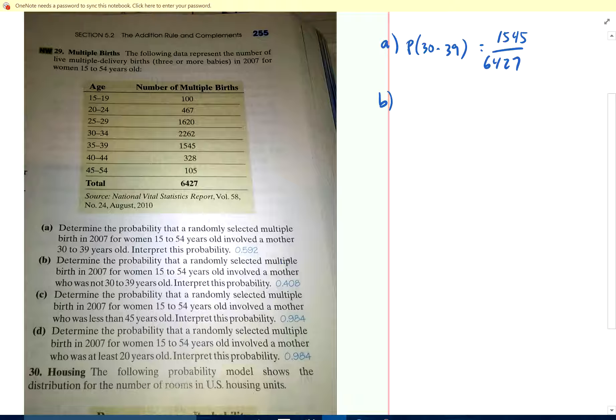B. Determine the probability of multiple births from 15 to 54 involved in a mother who was not 30 to 39. Well, let's look at this. Probability that you are 30 to 39 is 1545 divided by 6427, that's 24%. The probability that you're not 30 to 39 is 1 minus 24%, or 76%. That's a whole lot easier than adding up all the other possible components, all of these and all of these, right? That's what I want you to recognize for complements.